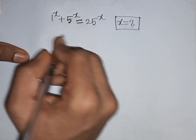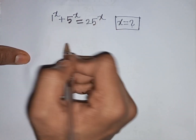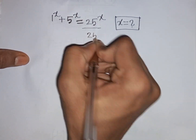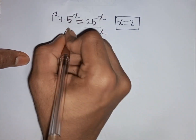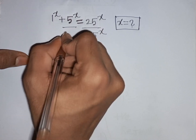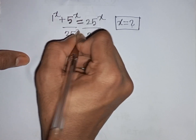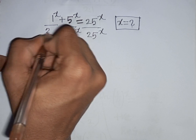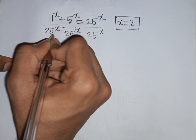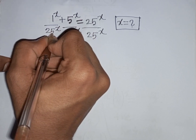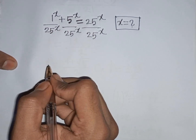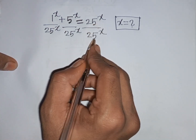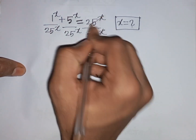First, we divide both sides by 25 power x. Dividing each term — 1 power x, 5 power x, and 25 power x — by 25 power x. The 25 power x terms cancel out.